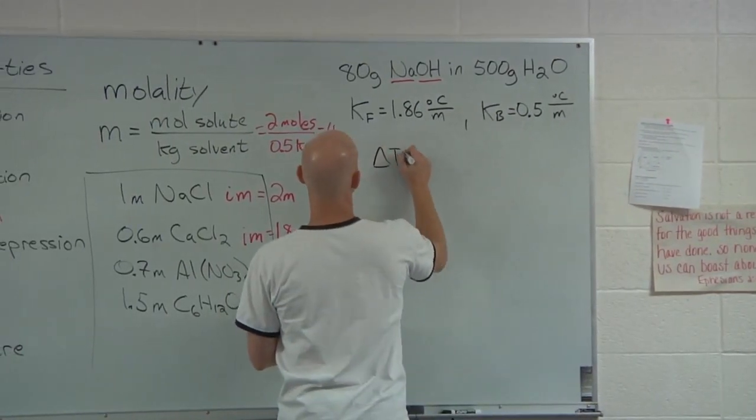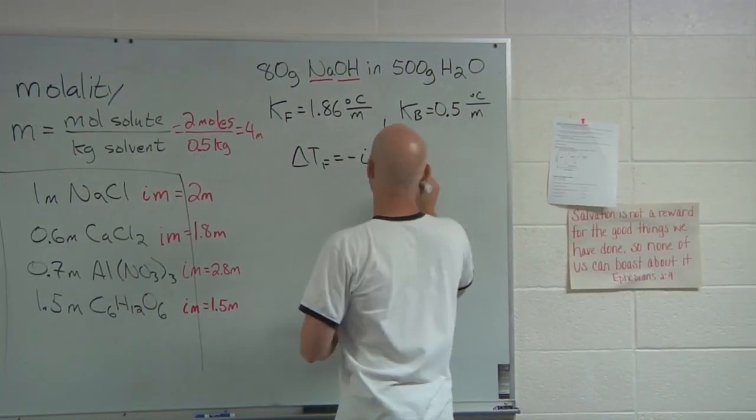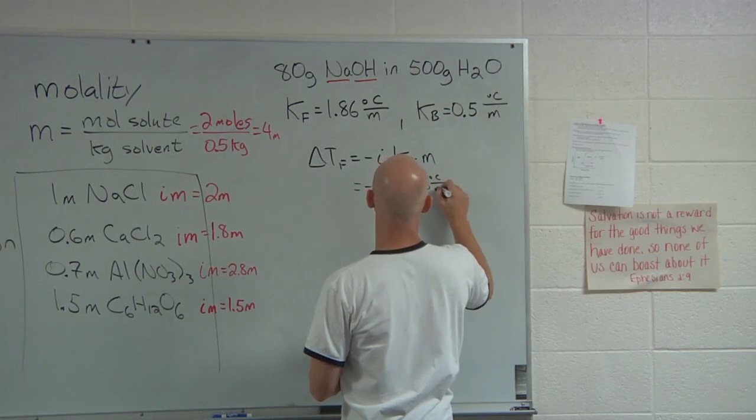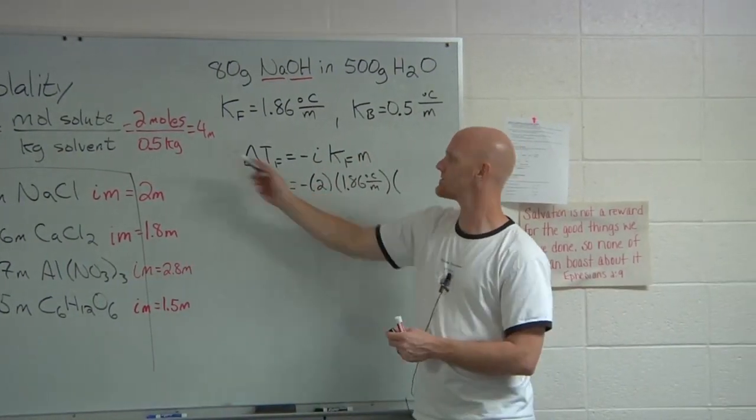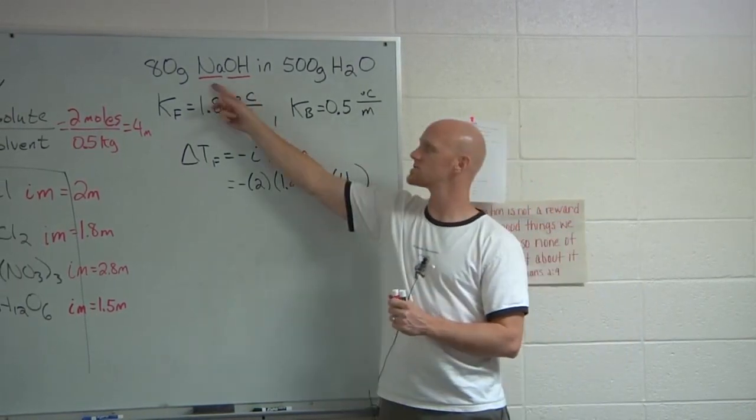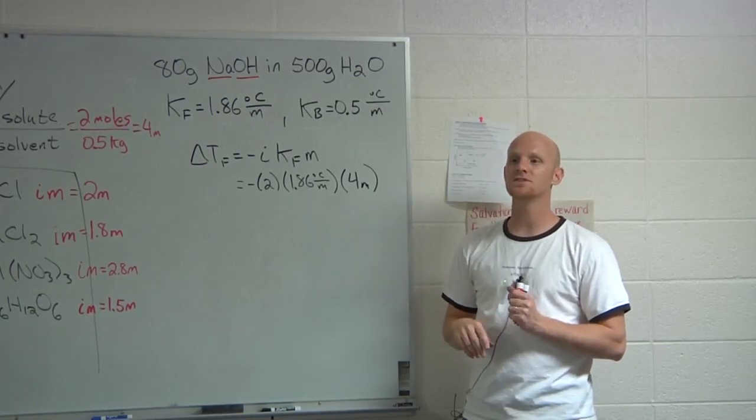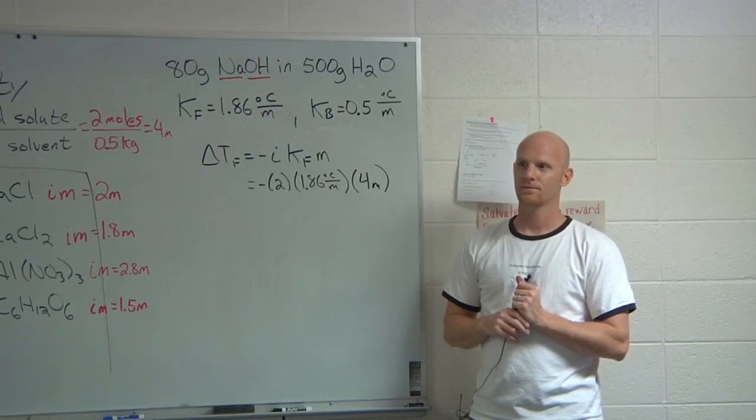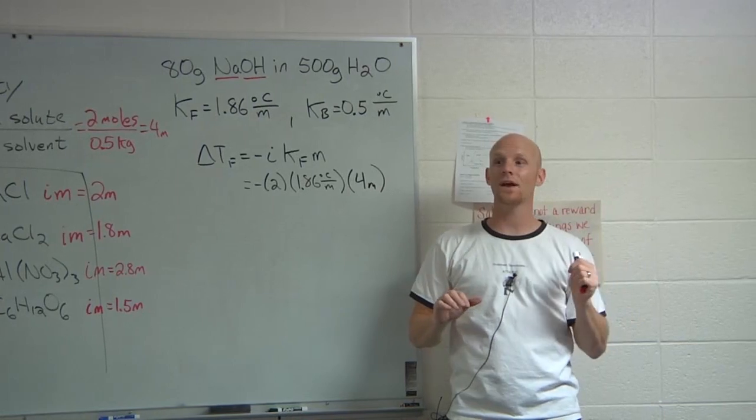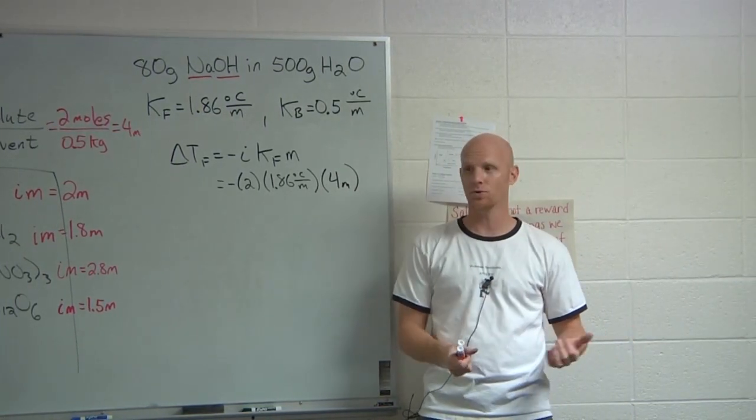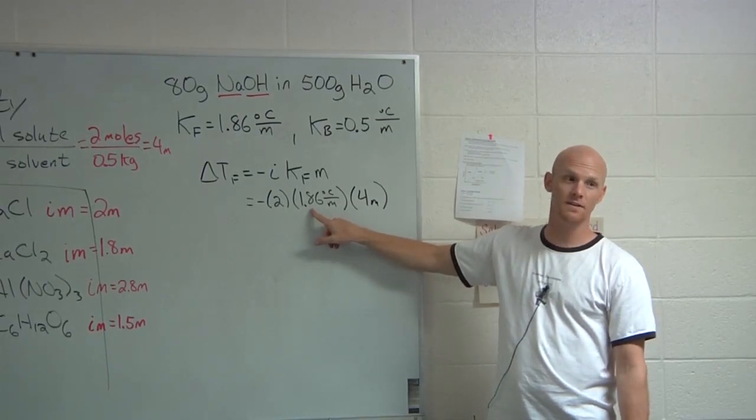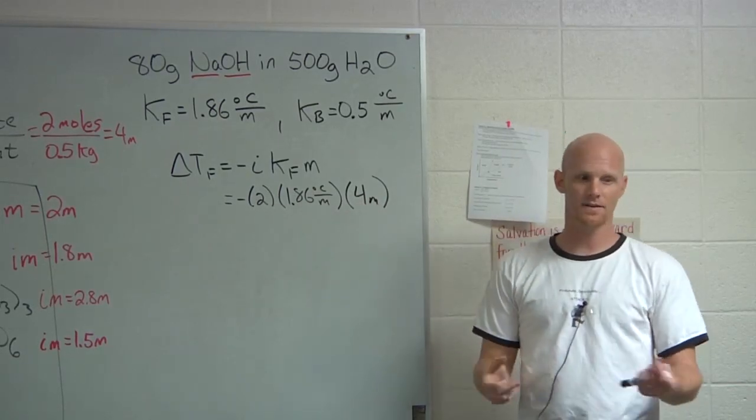So in this case, the change in the freezing point equals negative i·Kf·m. So in this case, what was i again? Good. Breaks up into two pieces. Freezing point constant is 1.86 degrees Celsius for every molal. And the molality here, we decided, was a 4 molal solution. So if you look at what's going on here, even though it's a 4 molal solution of NaOH, because it breaks up into two pieces, what will be the total concentration of pieces? Well, it's 4 molal NaOH, but then NaOH breaks up into a sodium and a hydroxide. And so you get 4 molal of sodium ions and 4 molal of hydroxide for a grand total of 8 molality of pieces. So for every molal of pieces, the freezing point goes down 1.86 degrees. And so in this case, if we have 8 molal of pieces, then you have to multiply that by 8, which is what we're doing. So that's kind of where the ideology of the equation comes from.